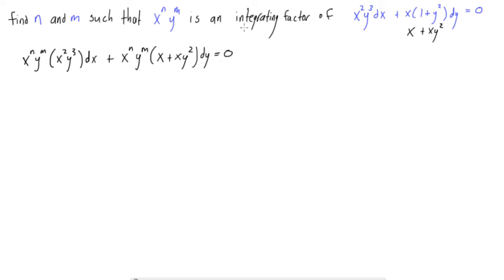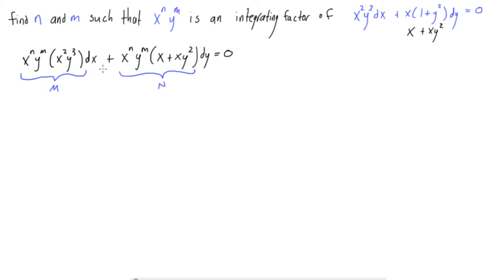Another assumption we get to make is that we said this has an integrating factor. If it's in the form of an exact equation but requires an integrating factor, that means once we multiply the integrating factor to it, it will become an exact equation. This here will be what we call capital M, and this here will be what we call capital N — using the usual convention for exact differential equations.